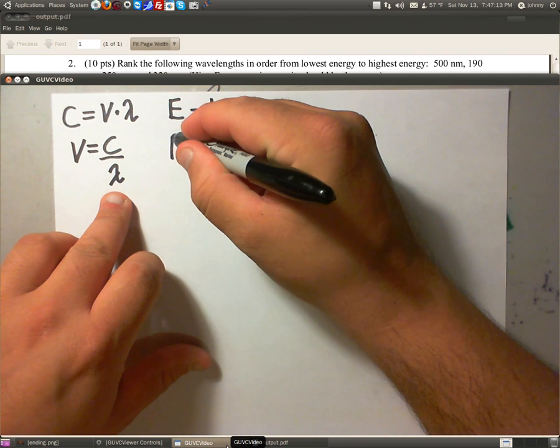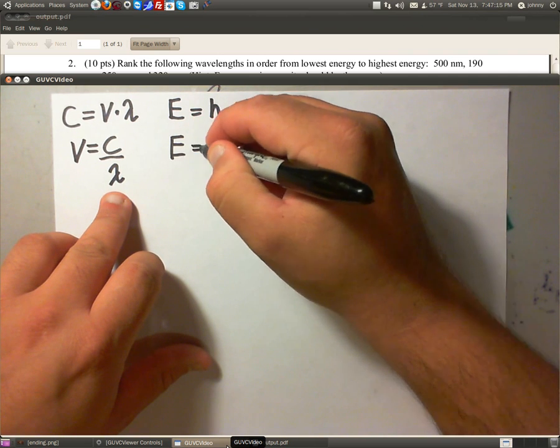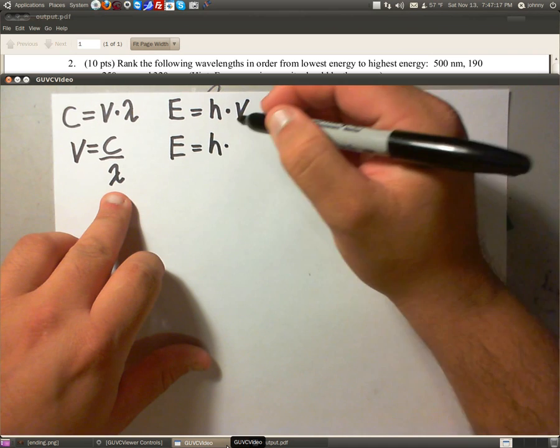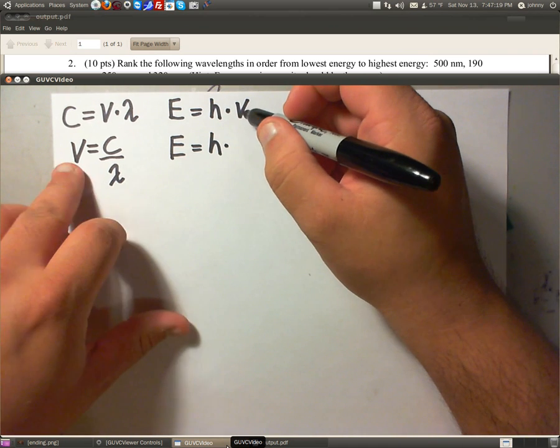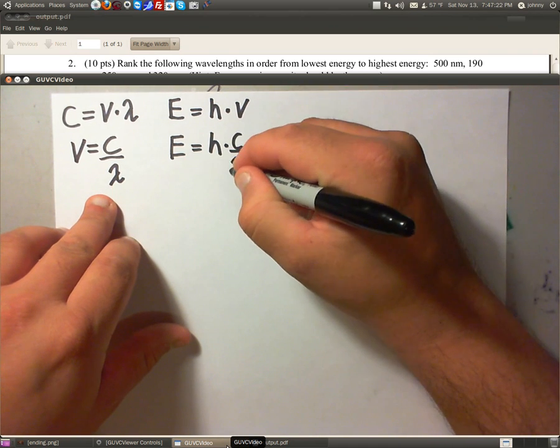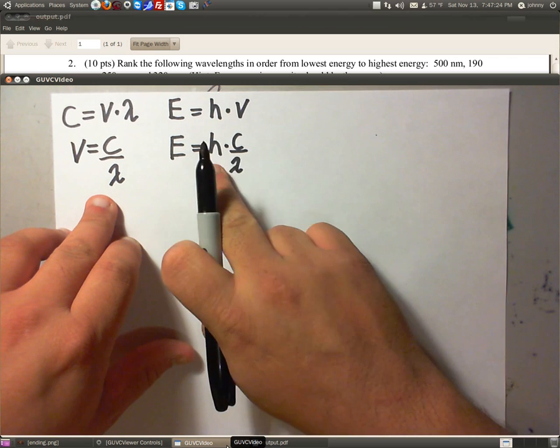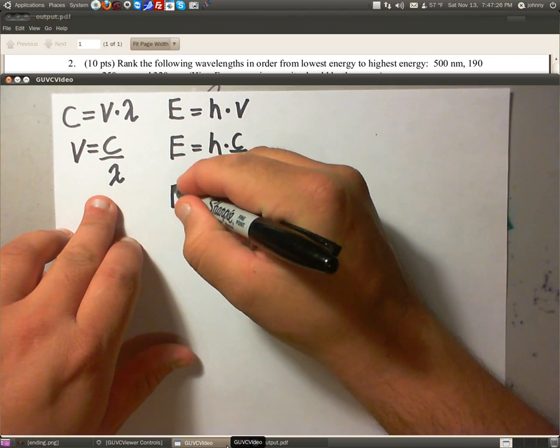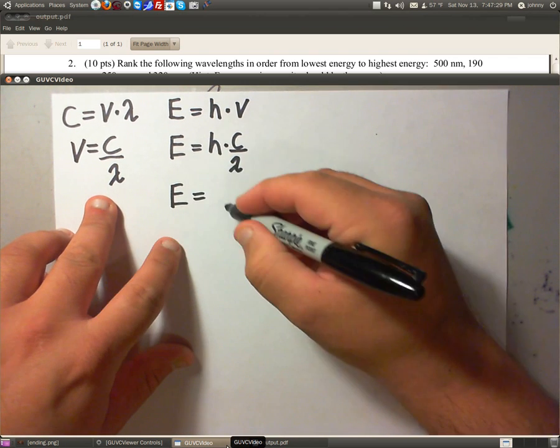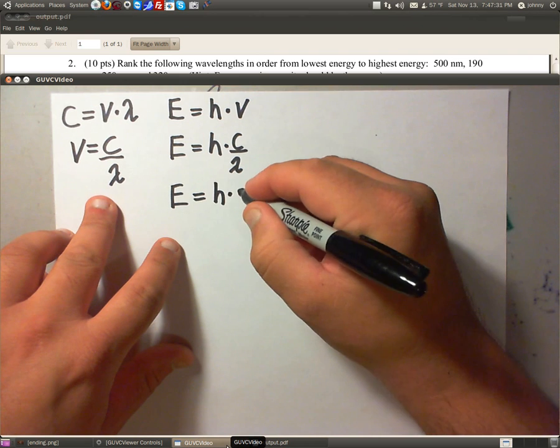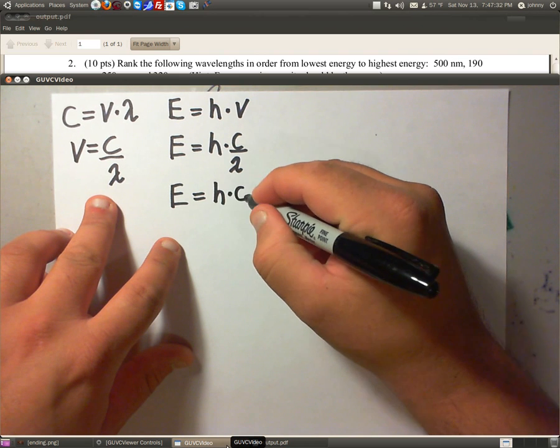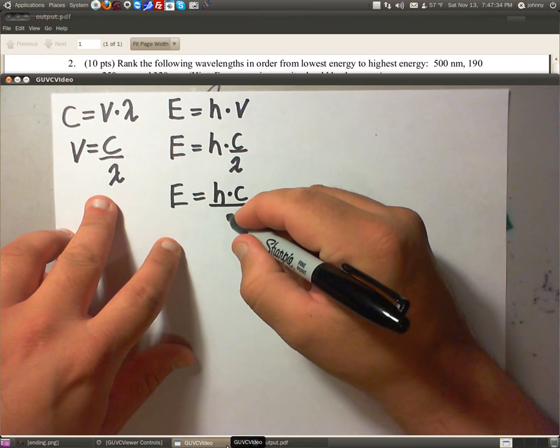What we have is energy equals H times, instead of V, we're going to plug in C over lambda. If you want to write this equation a little bit neater, this is also the same thing. E equals Planck's constant times the speed of light constant divided by lambda.